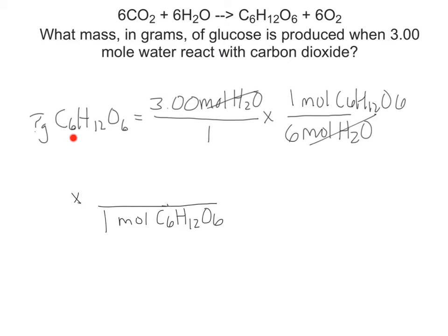Remember, to find the molar mass, I take my subscript times the atomic mass. So for carbon, I will take six times 12. For hydrogen, I will take 12 times one. And for oxygen, I will take six times 16. When I add all of those numbers together, I get a molar mass for glucose of 180 grams. So my molar mass will go on the top.